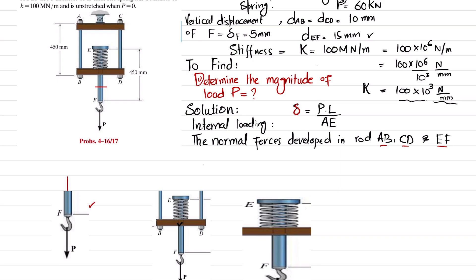For EF, when we cut it, the free body diagram is given below. P is downward, so in order to balance it, this P_EF equals P, that is upward. Same is the case if you want to find the internal loading in AB and CD.